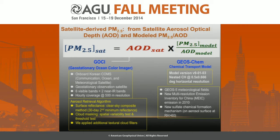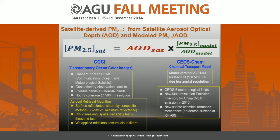GOSI refers to the Geostationary Ocean Color Imager that flies on a Korean satellite. The most distinguishable feature of this satellite is that it's geostationary, which means it moves synchronously with Earth, so it is relatively stationary. Because of that feature, GOSI is able to provide aerosol optical properties at hourly resolution over its target region, including eastern China.